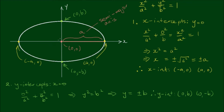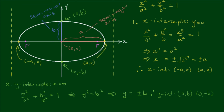The distance from the origin to the y-intercepts is the length b. We call this the semi-minor axis. We've also established that the ellipse has two focal points — focal point f and focal point f', mirrored about the y-axis. And because we have two focal points, we must also have two directrices, which I'll label as d and d'. The next things to do are to work out the coordinates of the foci and the equations of the directrices.